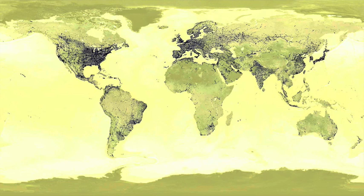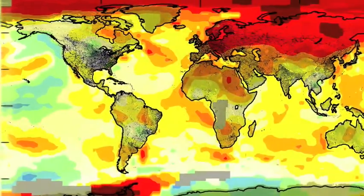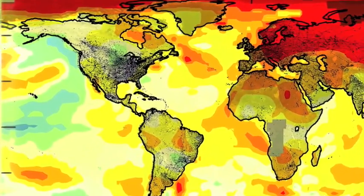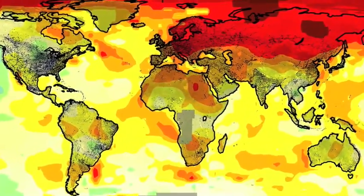Let's put the temperature map over the map of city lights. Notice anything? The urban areas don't really correspond with the red, warming zones. Doesn't that seem strange if these urban areas are supposed to be the places where thermometers are distorted?